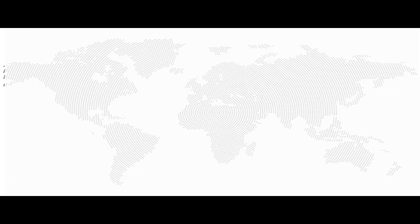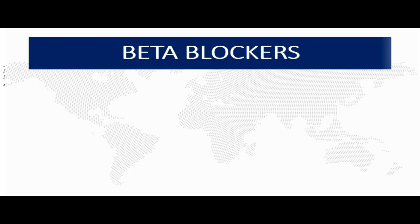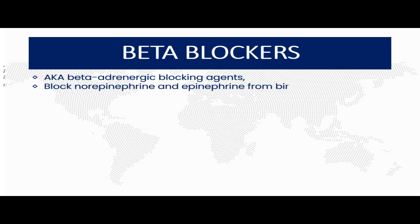Welcome back to Medcrime. Today we shall be looking at the classification of beta blockers and the mnemonics to help you master these classes and the examples. Beta blockers are a class of drugs used in the treatment of hypertension, also known as beta-adrenergic blocking agents. These beta blockers work by blocking the neurotransmitters norepinephrine and epinephrine from binding to their beta receptors.